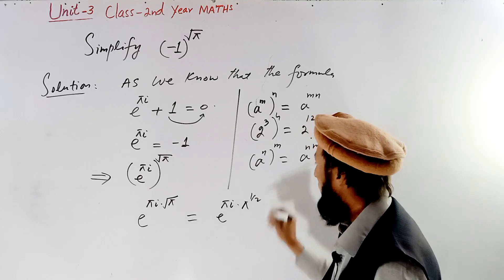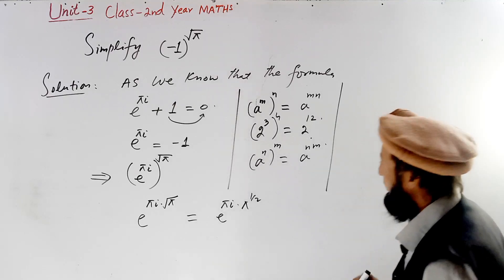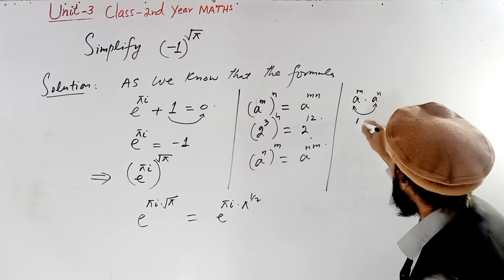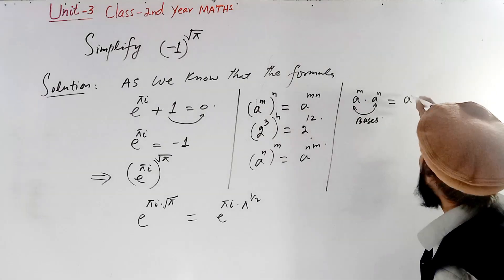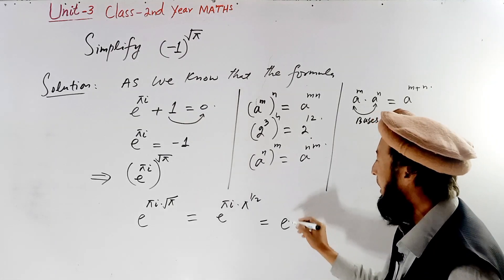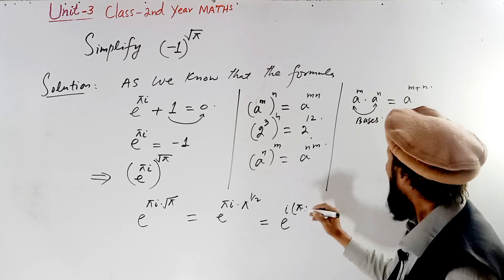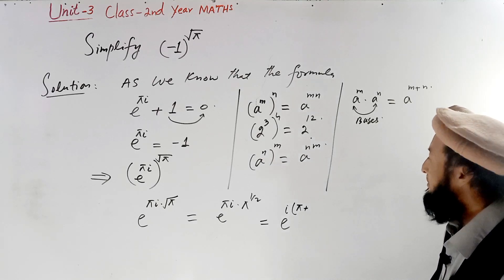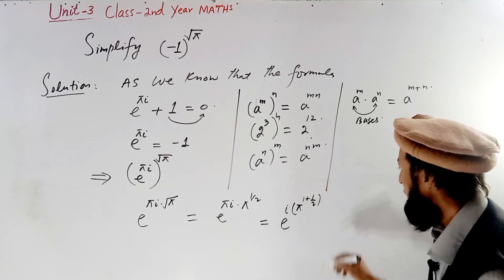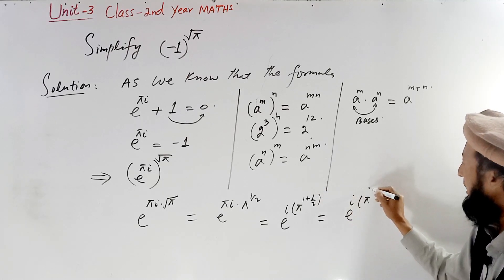We can write pi times square root of pi as pi to the power 1 times pi to the power one-half. When bases are the same, we add the exponents. So we add the powers: 1 plus one-half gives three-halves. Therefore, the exponent simplifies to i times pi to the power 3 over 2.